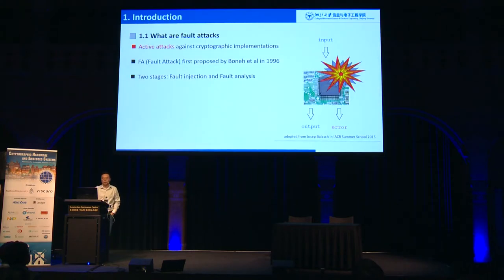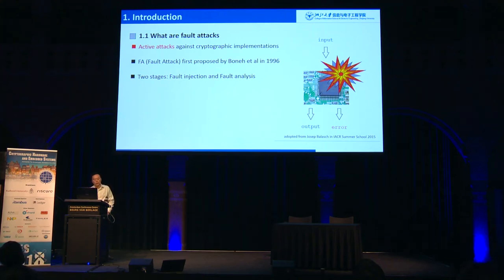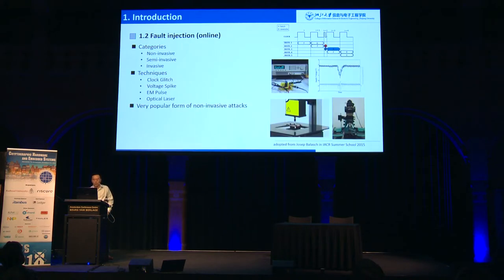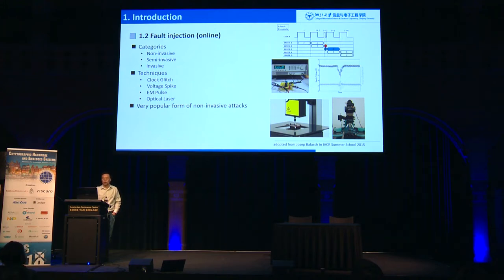Fault attack is an active attack, first proposed by Don Bonet in 1996. It has two stages: the online fault injection stage and the offline fault analysis stage. The adversary needs some equipment to generate non-invasive, semi-invasive, or invasive injections. This could be done by clock glitch, voltage glitch, EMFI, or laser FI. Most of the fault attacks are non-invasive attacks.